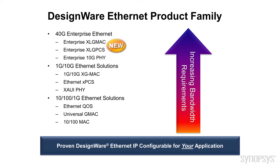We also have the 1G and 10G Ethernet solutions, which consist of a MAC, PCS, and Zowie PHY, as well as the 10/100 1G Ethernet, which is used in a range of products, from low-end consumer printers to automotive applications in the Ethernet QoS.